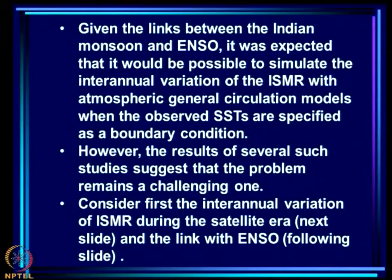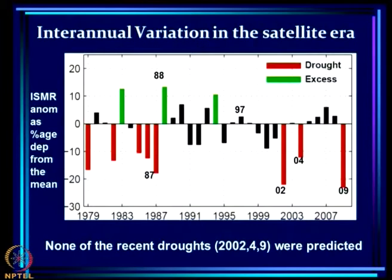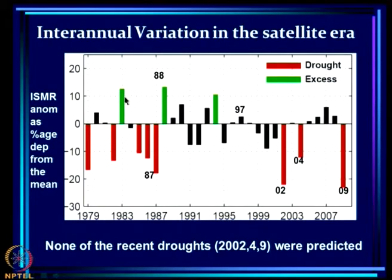Consider first the inter-annual variation of ISMR during the satellite era and the link with ENSO. The nature of the inter-annual variation is shown from 1979 onwards. Droughts mean a deficit of more than 10 percent, which is the same as one standard deviation, and excess is above-normal rainfall where the anomaly is larger than 10 percent or one standard deviation.